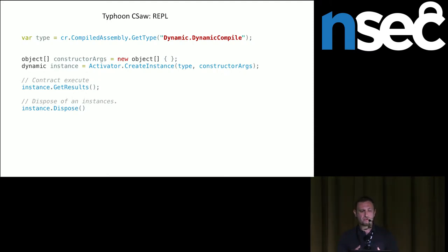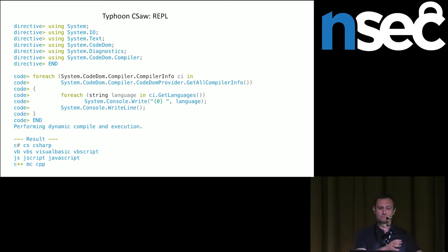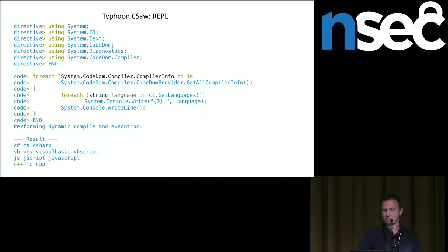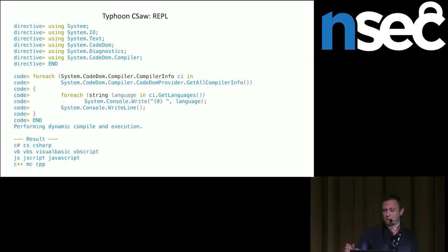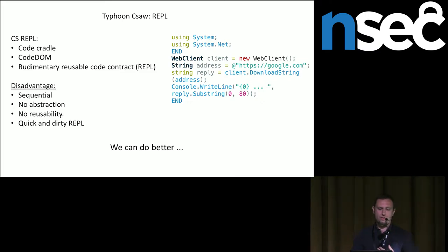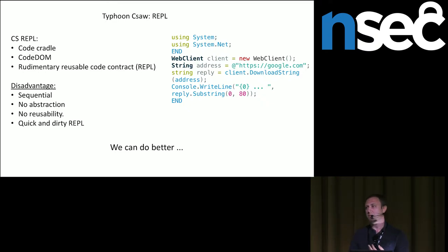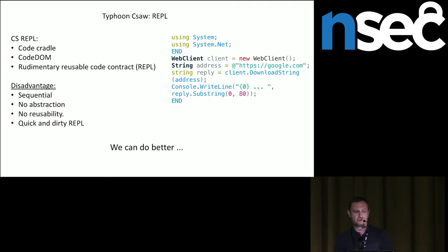Once you compile, you can reflectively load your namespace — for example it's called DynamicCompile — then use Activator reflection to create an instance of the code you've just compiled through REPL, get results, and dispose. Essentially this is how our REPL works. At whatever interpreter shell you have, you specify a directive that goes into the preamble, then you have the code, compile it, and get the result by invoking the contract. In this contrived example we just get the number of languages and compilers available on the system — but your mileage may vary; you can start querying the system through .NET. CS REPL has a code cradle, uses CodeDOM, and has rudimentary reusable components because of the contract. But it's sequential, there's no abstraction, you can't run functions, create namespaces, or reuse the code. It's quick and dirty — it works, but we can do better.